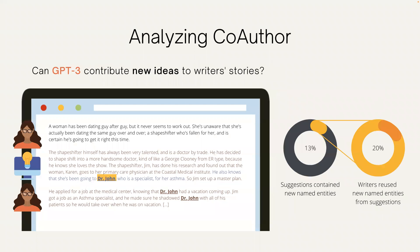In another analysis, we looked at instances of writers taking new ideas from suggestions and reusing them in subsequent writing by identifying named entities such as names and locations. In creative writing, we observed that 13% of suggestions contained new named entities, among which 20% were reused by writers in subsequent writing.